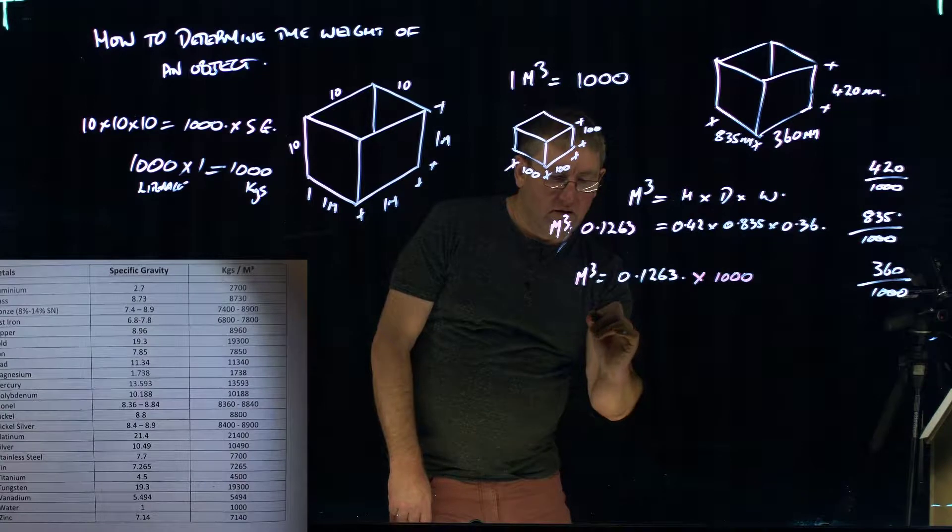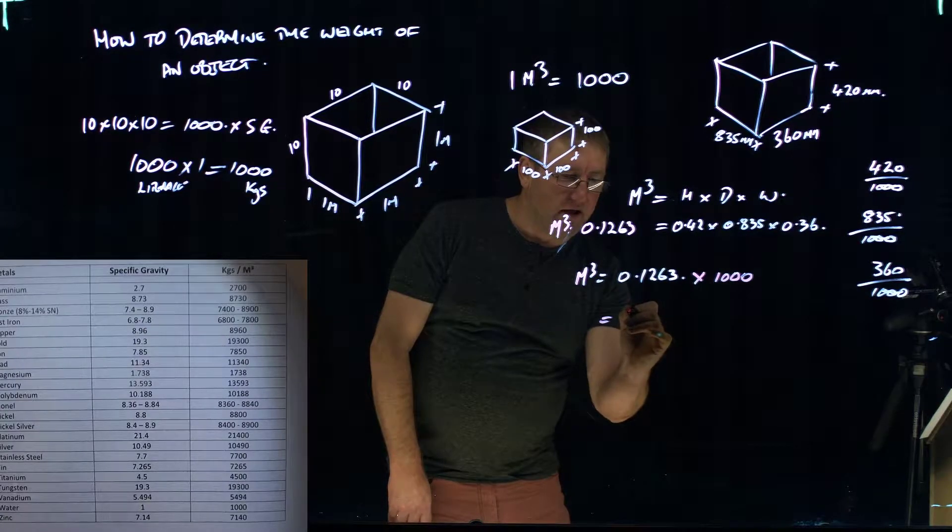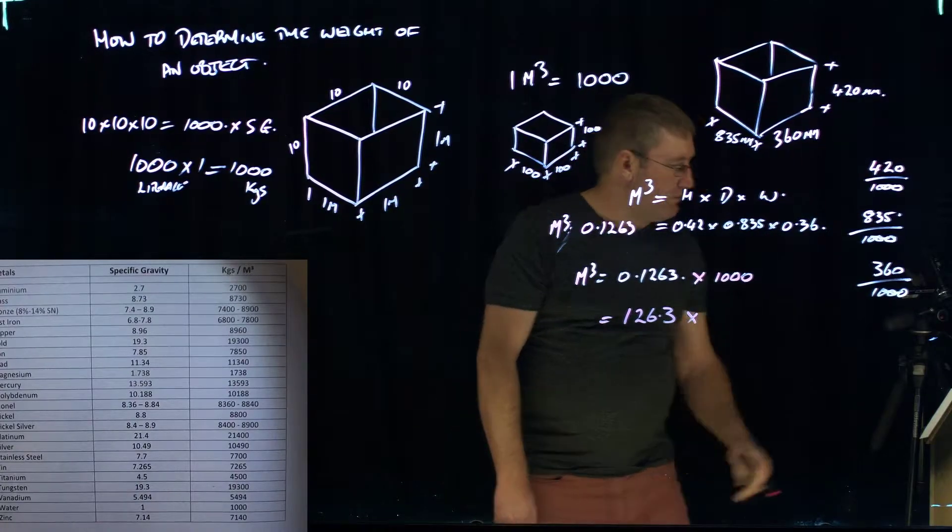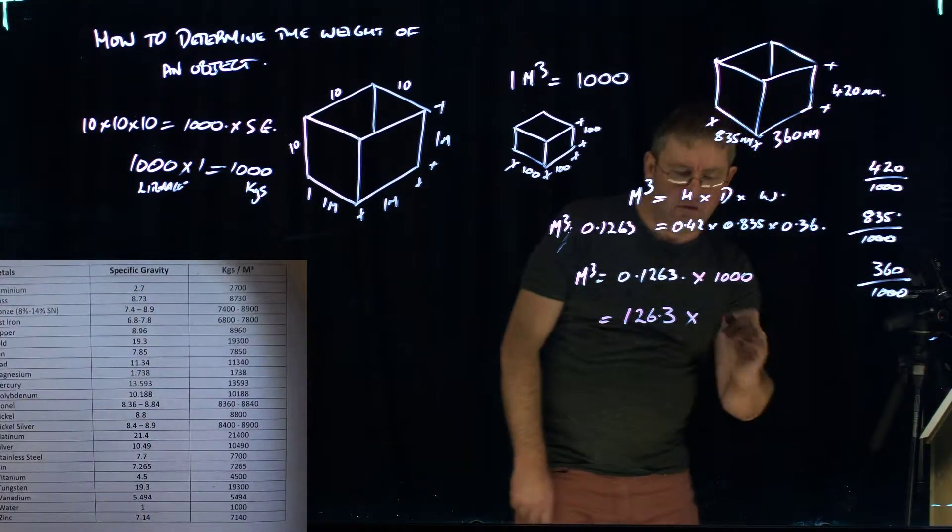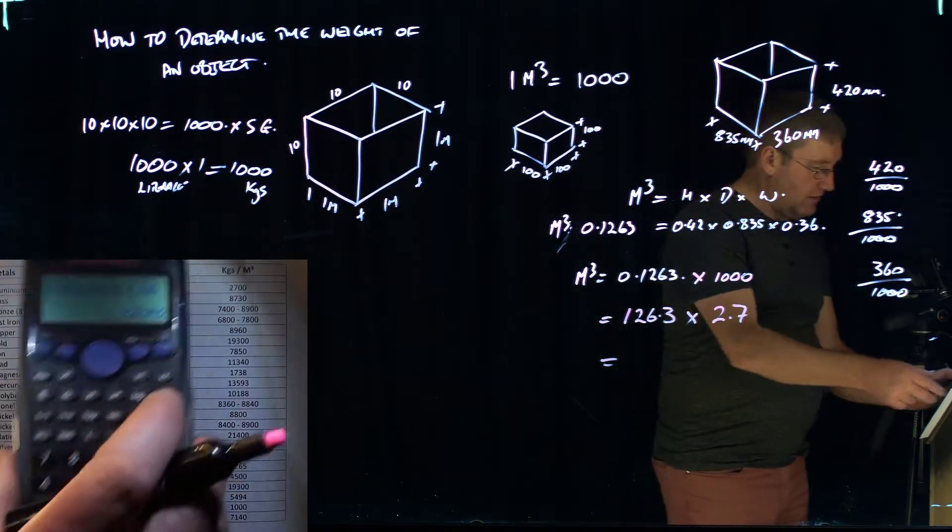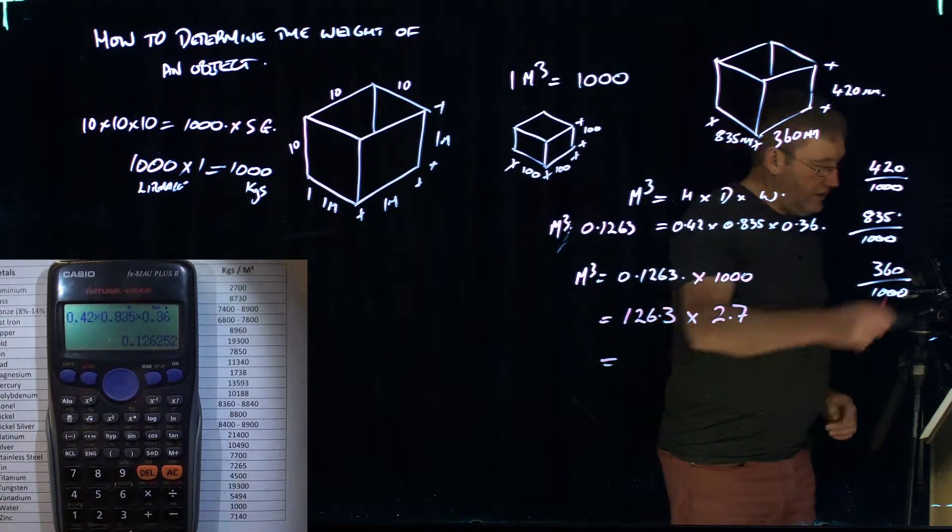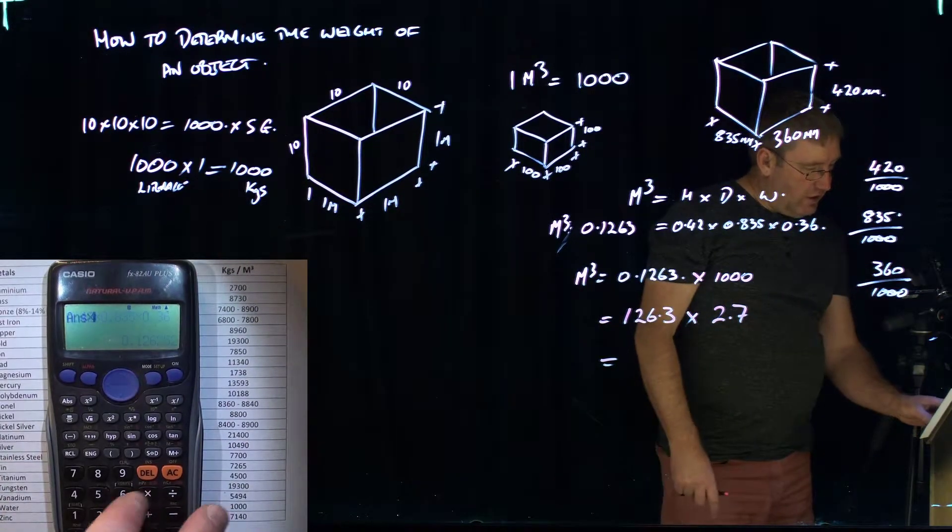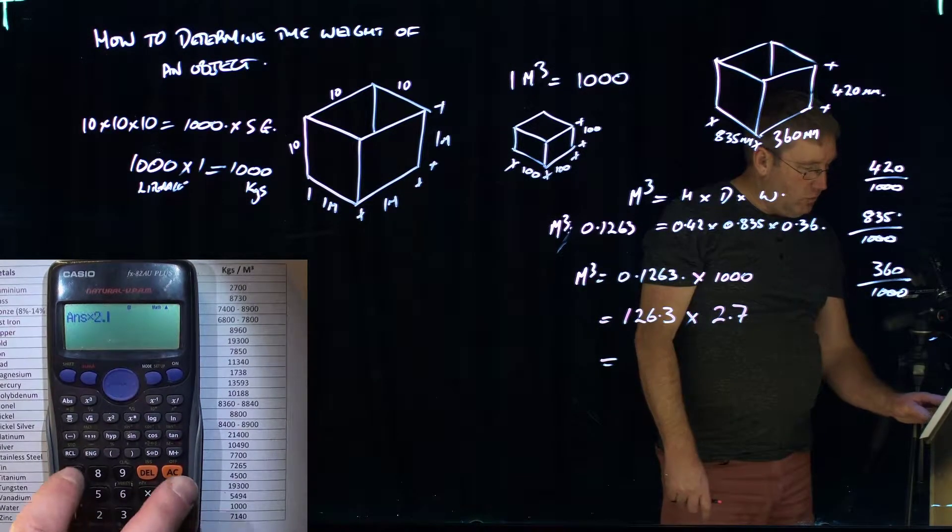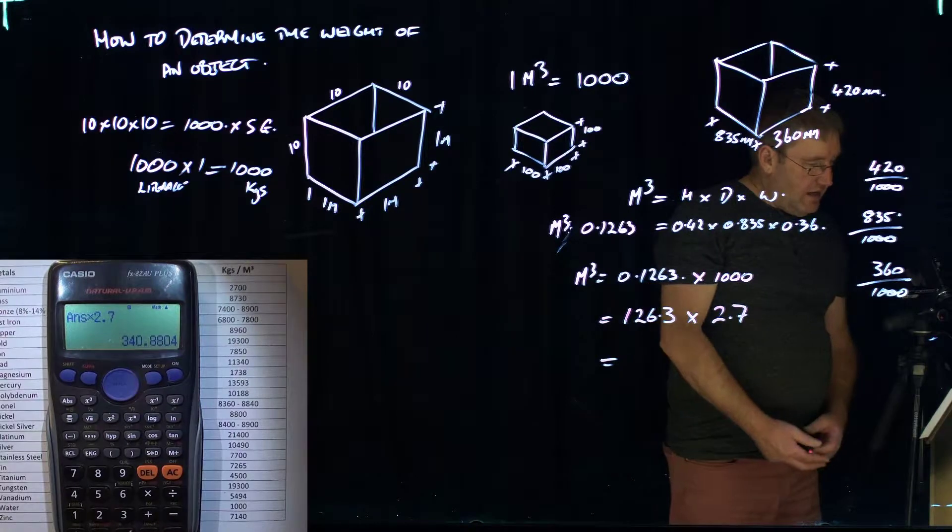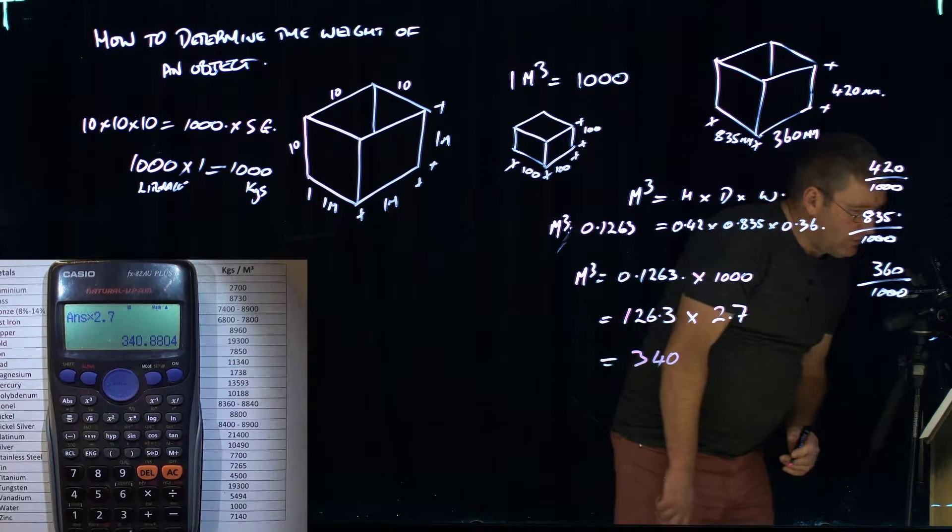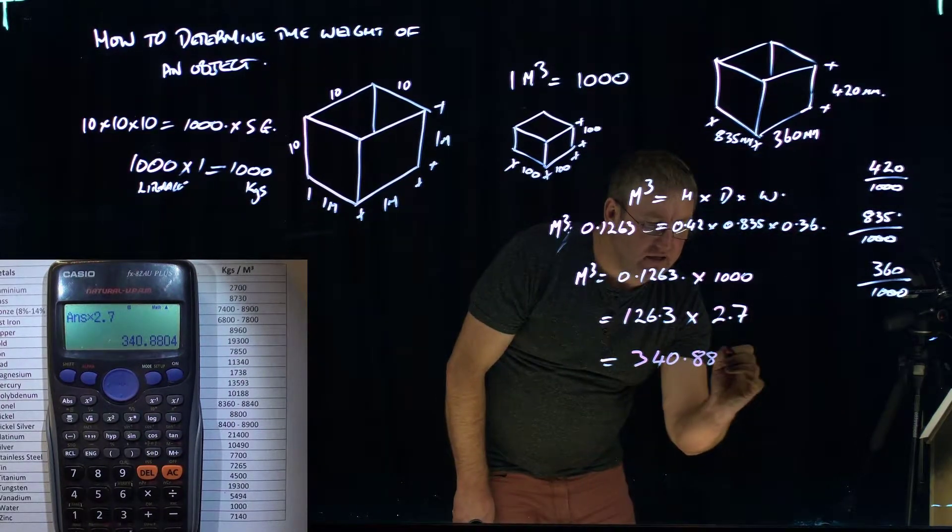So if we do that, we're going to have a capacity of 126.3. And we're going to times that by the specific gravity of 2.7. And this is going to give us the weight in kilograms. So on the calculator, timesing it by 1,000, and then we times it by 2.7. And it gives us a weight of 340.88 kilograms.